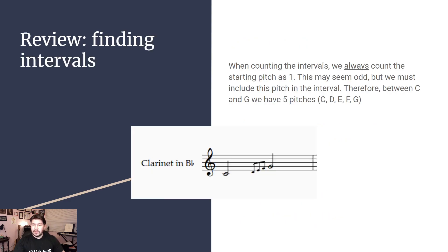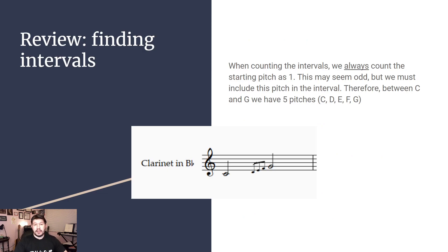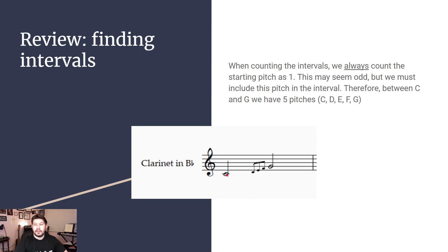Moving on, we are going to review how to find an interval. This slide should look familiar because I copy and pasted it from our last lesson. When counting the intervals we are always going to count the starting pitch as number one. We absolutely have to include that starting pitch in our counting, because otherwise we're going to be off. So we count all of the pitches that are between C and G, and that gives us D, E, and F. Adding that to our two pitches that we started with, we see that we have five pitches.